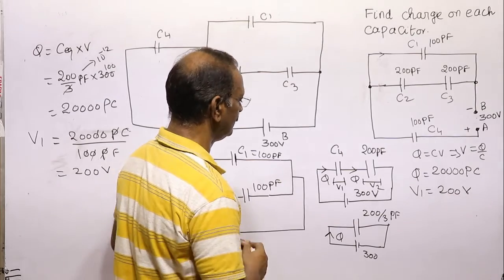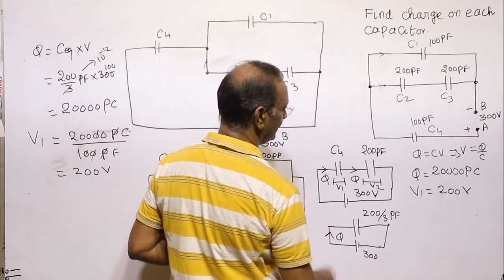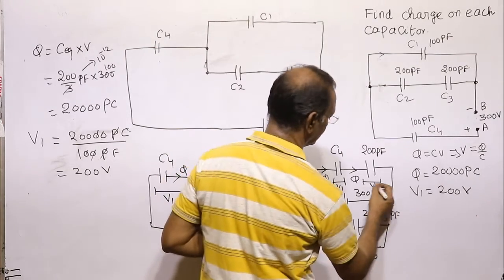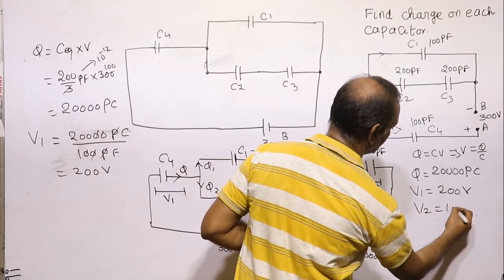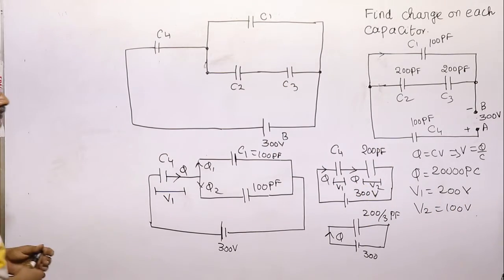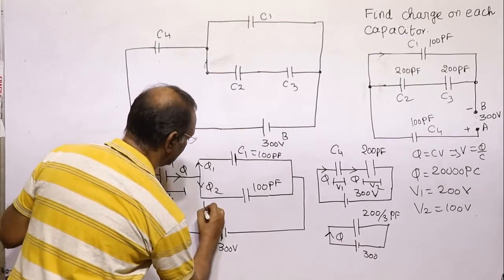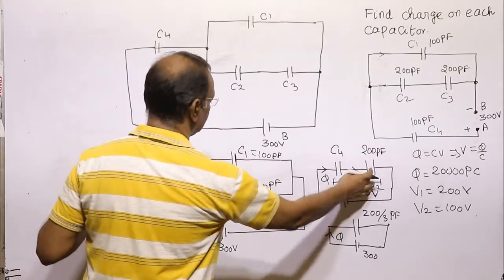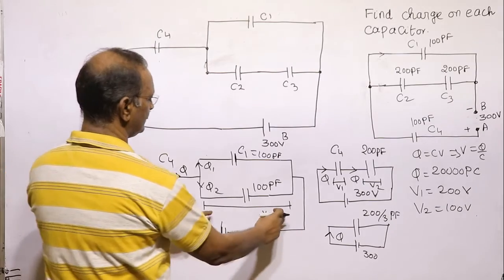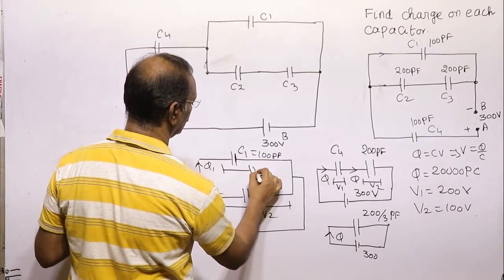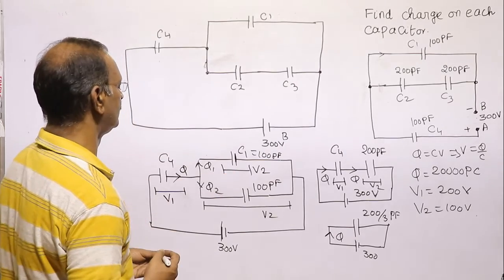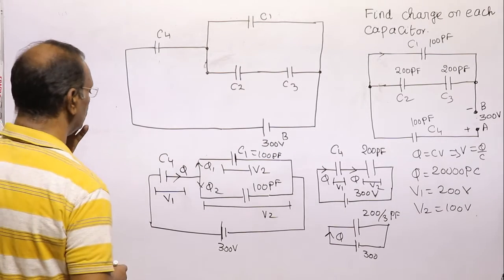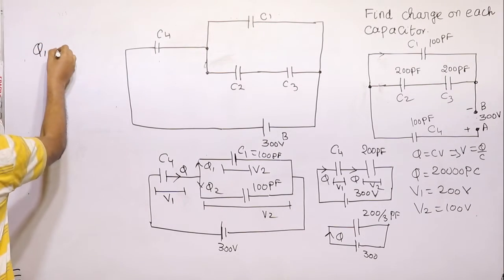Since V1 is 200 volts and total is 300 volts, the remaining V2 = 300 - 200 = 100 volts. V2 is the voltage applied across the parallel combination of C1 and the C2-C3 series branch. Since they are parallel, both receive 100 volts.